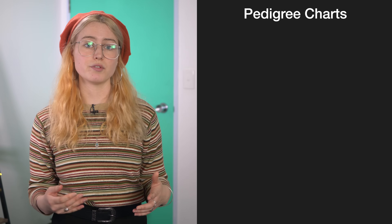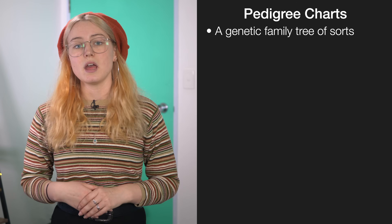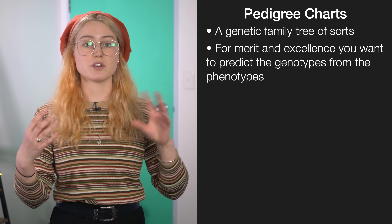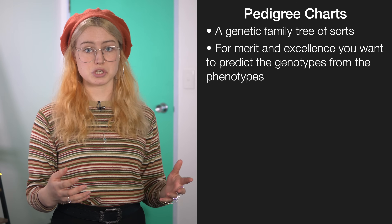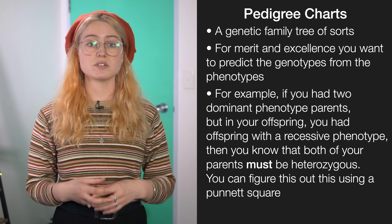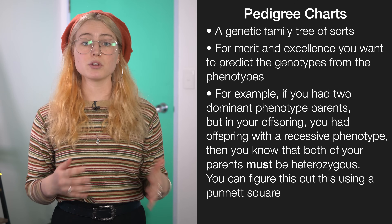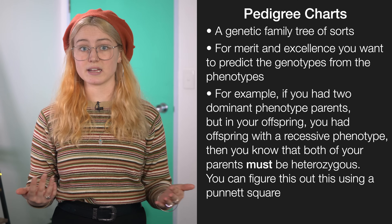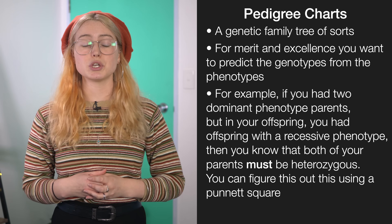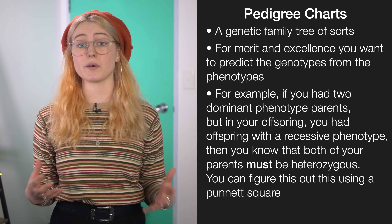Pedigree charts can be thought of as a genetic family tree, where you're shown all the phenotypes of individuals within a family. For merit and excellence, you really want to be predicting the genotypes based off the phenotypes. For example, if two parents both show the dominant phenotype but produce a child who is homozygous recessive, this means both parents must be heterozygous — each carrying one recessive allele that combined during fertilization. Using reasoning like this, you can predict the genotype of sometimes entire pedigree charts.